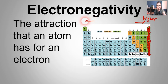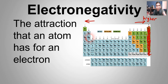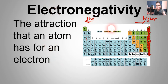The ones on the left side — like lithium, sodium, potassium, magnesium — they don't want to attract electrons at all. They're trying to get rid of electrons they already have; they're trying to lose electrons to get an octet. So these on the left would have a very low electronegativity.